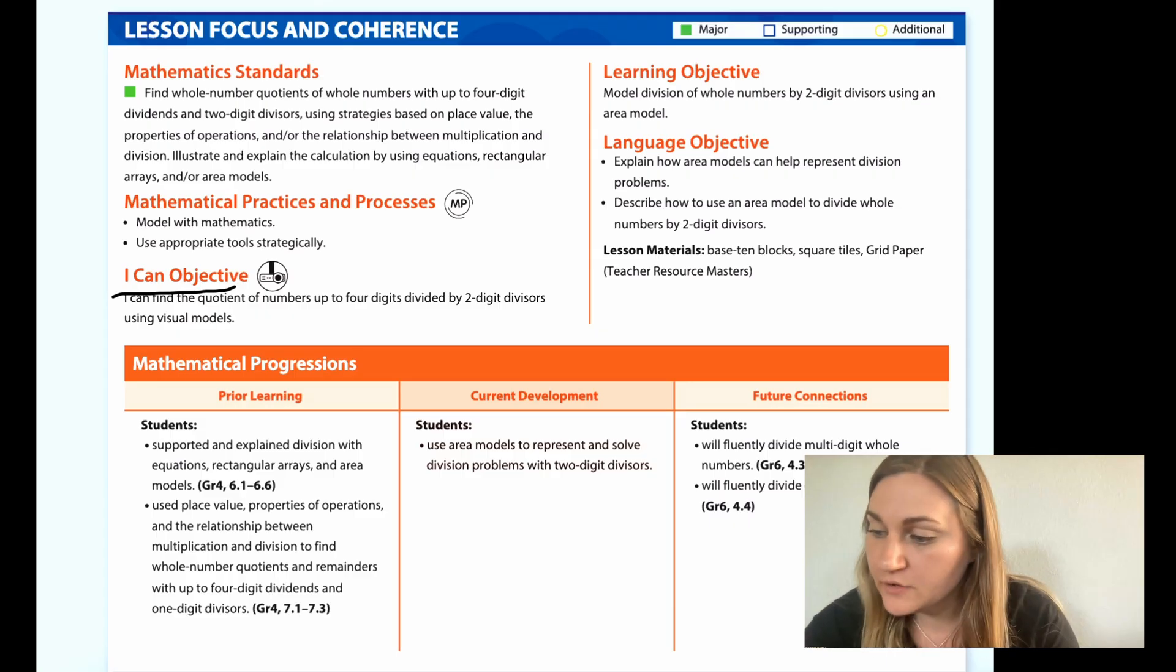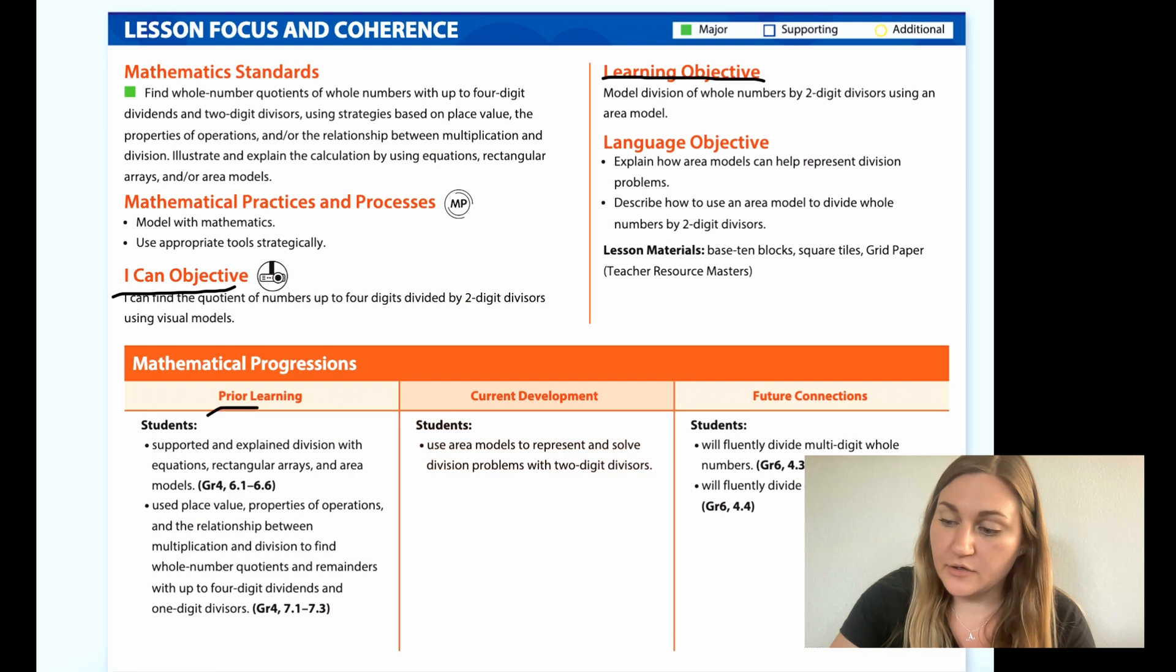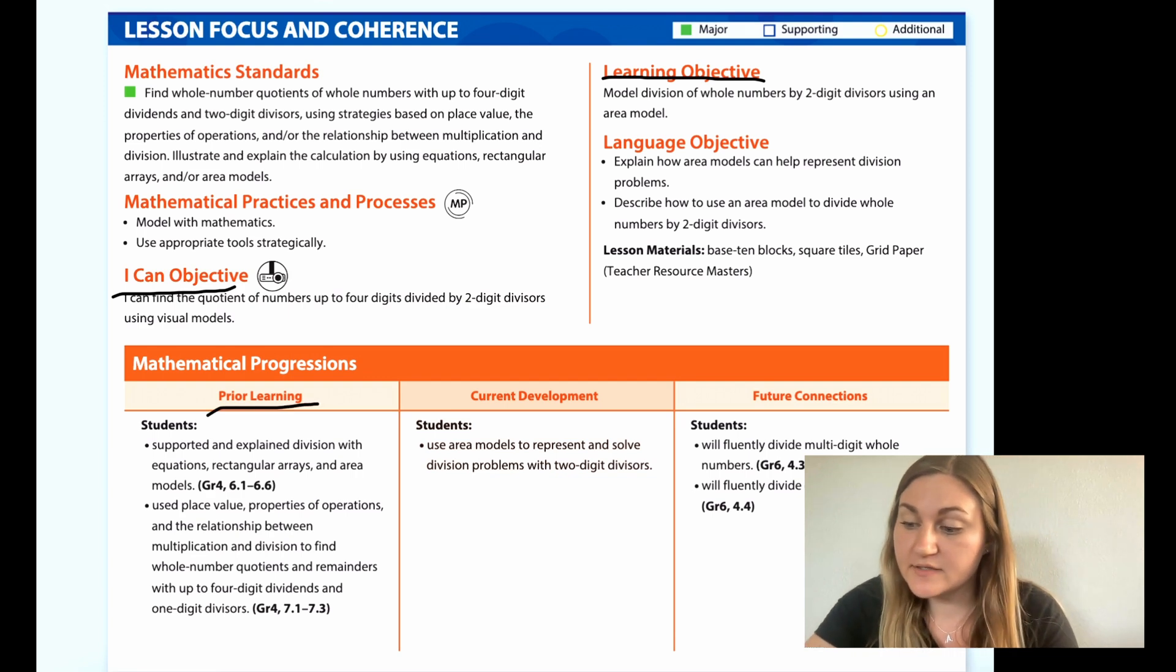The learning objective here is that model division of whole numbers by two-digit divisors using an area model. The prior learning, last year, students supported and explained division with equations, regular arrays, and area models. Students use place value properties of operations and the relationship between multiplication and division to find whole number quotients and remainders with up to four-digit dividends and one-digit divisors.